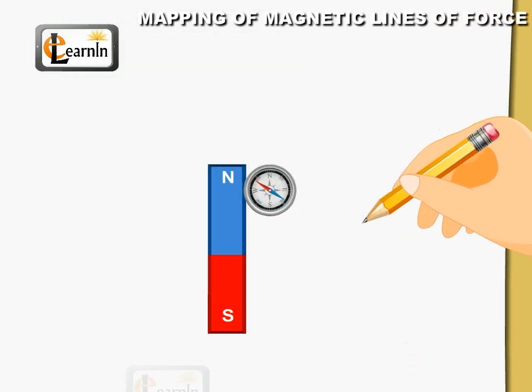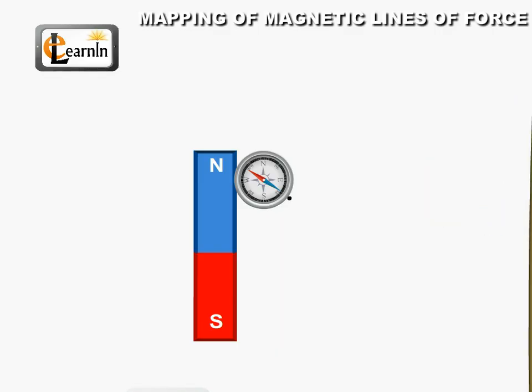With a pencil, mark the direction of the north pole of the plotting compass, say P1.